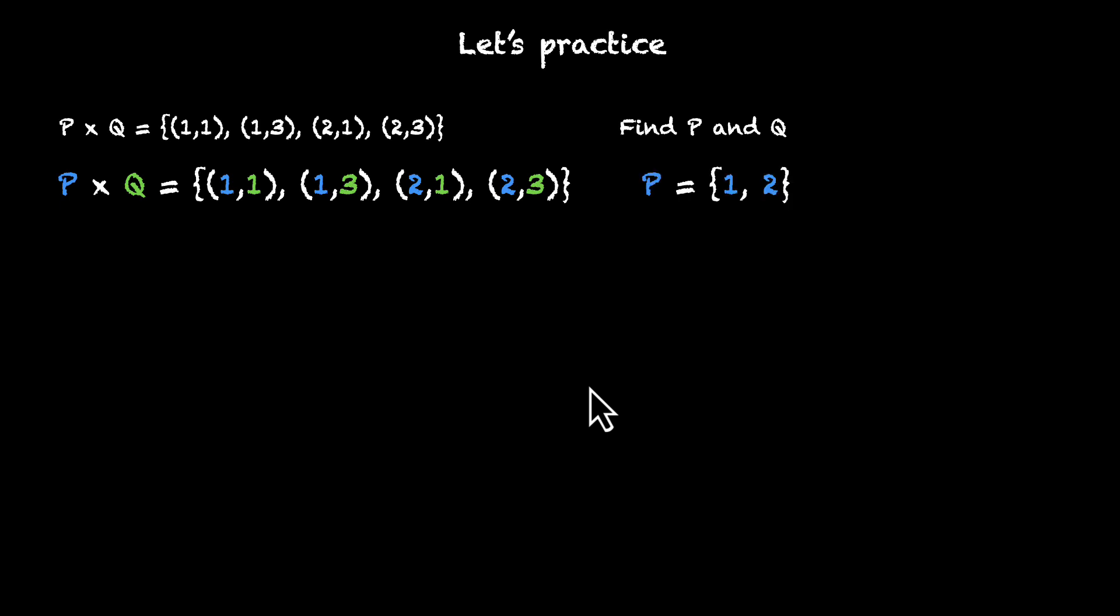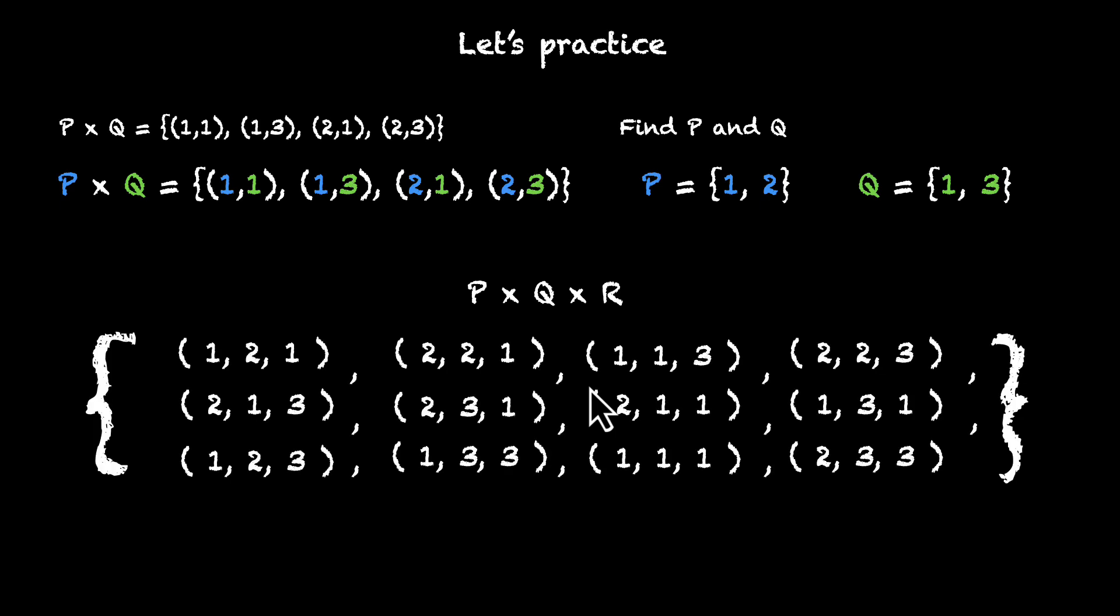So P is {1, 2} and Q is {1, 3}. And it works just as smoothly in the case of ordered triplets as well. Here's an example. P times Q times R, this is what we have as a Cartesian product of these three sets, P, Q and R. Let's try figuring out the elements of the sets P, Q and R. Pause the video, give this a shot.